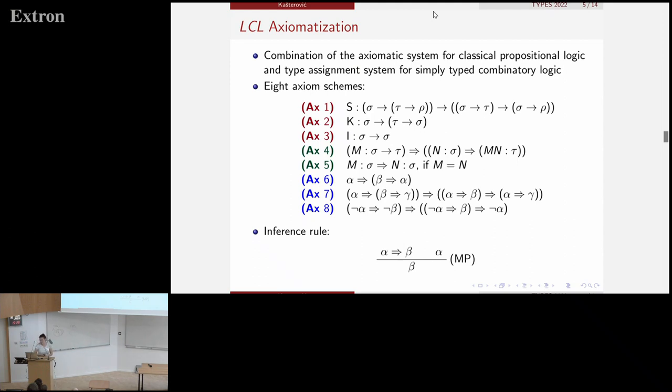Then the fourth is obtained from the typing rule for typing the application. The fifth is obtained from the rule that is sometimes added to the type assignment system in order to ensure that the terms that are equal will have the same type. And the last three axiom schemes are actually from the axiomatic system for classical propositional logic. The inference rule is modus ponens, again, from the axiomatic system for classical propositional logic.